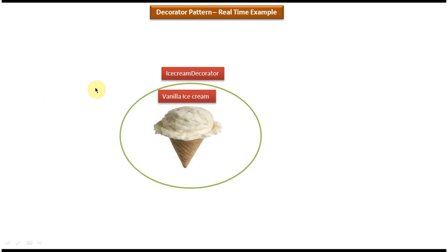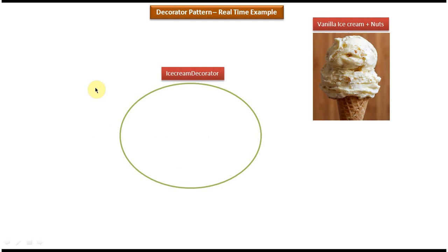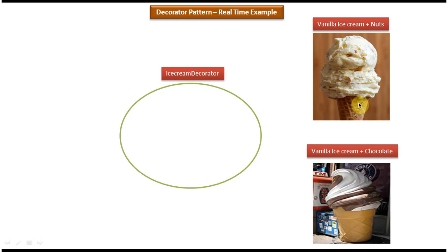If I want vanilla ice cream with nuts, the ice cream decorator will add nuts to the existing vanilla ice cream and give vanilla ice cream with nuts. Similarly, if I want to add chocolate, the ice cream decorator will add chocolate to the vanilla ice cream and give vanilla ice cream with chocolate.